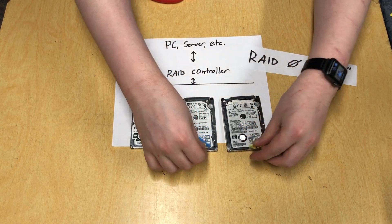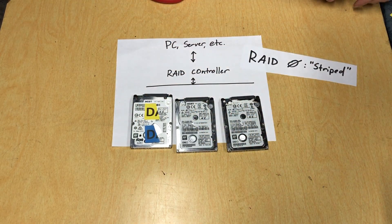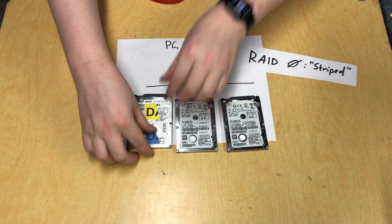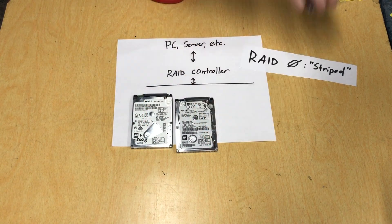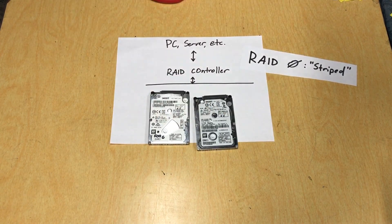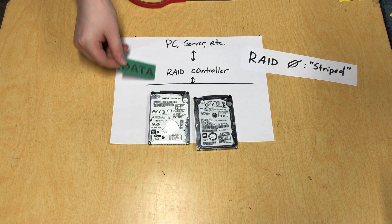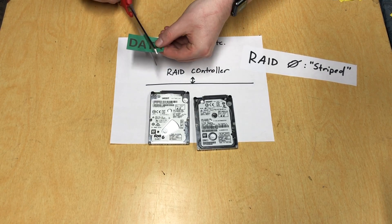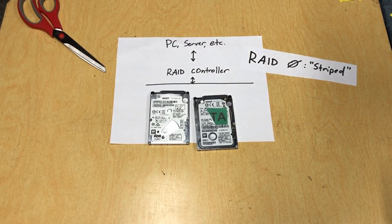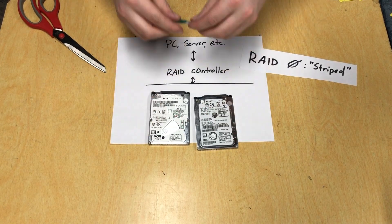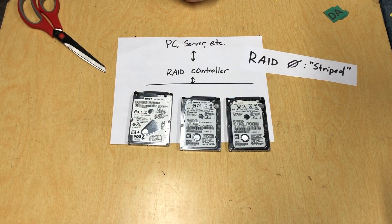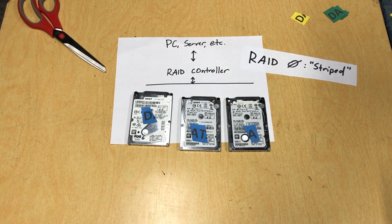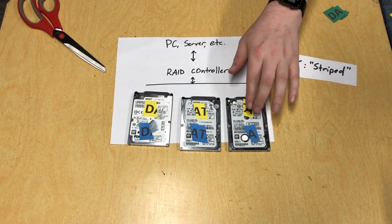Now, remember I said that you needed a minimum of two drives for this setup. So let's run through this again using the minimum of two drives, just to see how it changes things. The computer creates the data, it passes it to the RAID controller, and this time the RAID controller just splits it in half because there's only two drives. So let's get our three drive example set back up so we can talk about why on earth you would ever want to set this up. In a word: speed.